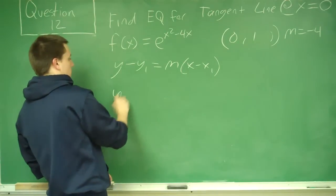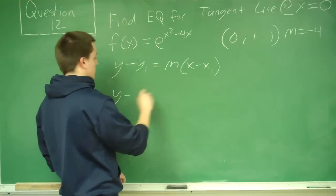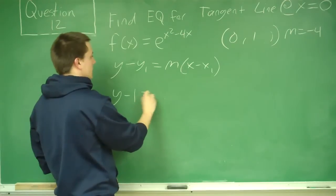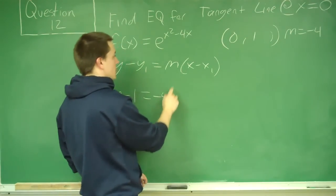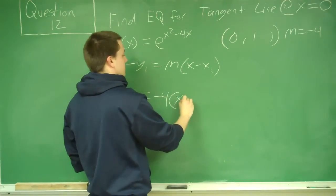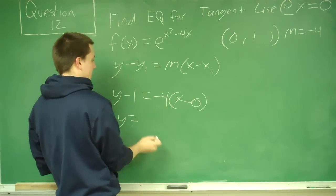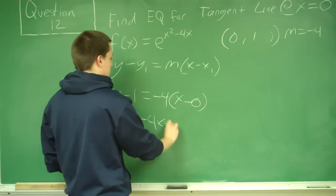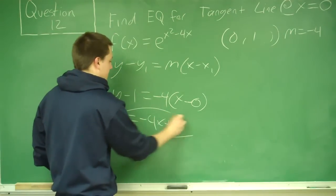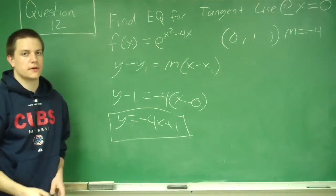So we get y minus 1 equals, now the slope which is negative 4, times x minus 0. And then we just bring that 1 over, we're going to get negative 4x plus 1. And that's going to be your final answer.